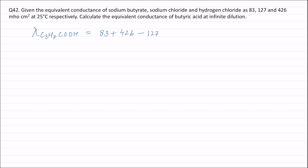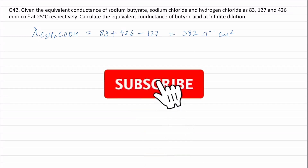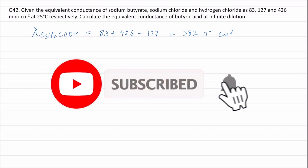This is equal to 382 per ohm centimetre square. Therefore, the equivalent conductance of butyric acid at infinite dilution is 382 per ohm centimetre square.